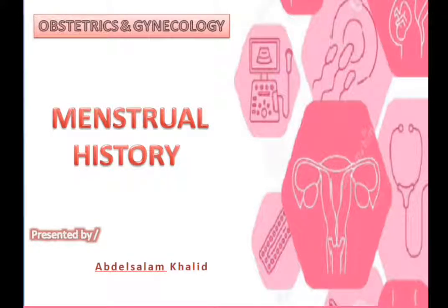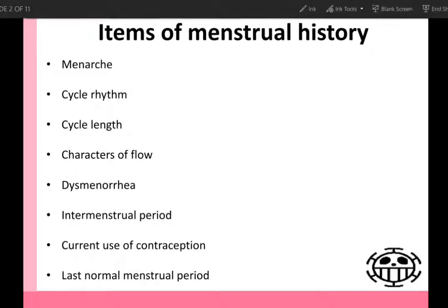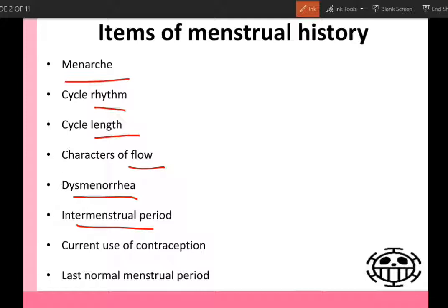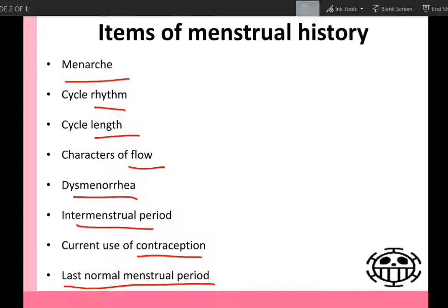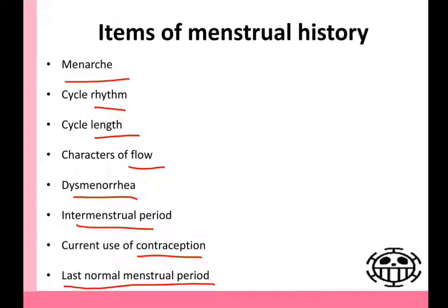Hey everyone! In this video I will talk about how to take menstrual history. The items of menstrual history are menarche, cycle rhythm, cycle length, characters of flow, dysmenorrhea, intermenstrual period, current use of contraception, and last normal menstrual period. And I will talk about each item in details.